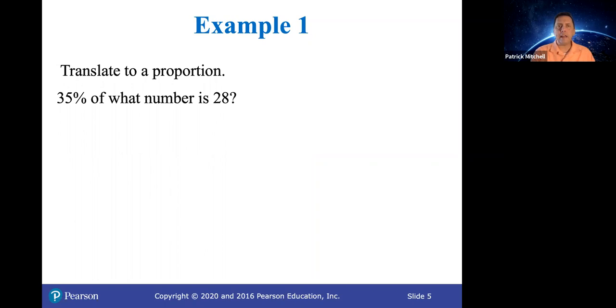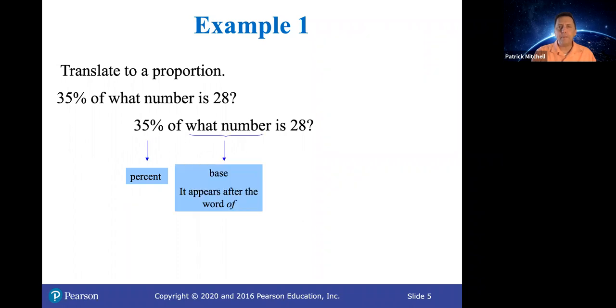So you're going to see that in this example. They want us to translate this into a proportion. We're not going to solve it yet. 35% of what number is 28? 35 is the percent. What number is the base because it comes after the word of. And then 28 is the amount. So notice that the amount is the part compared to the whole. So as a proportion, that would look like this. Notice they're using b for base.